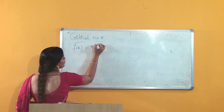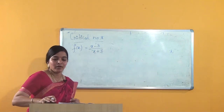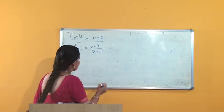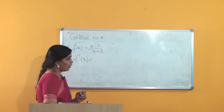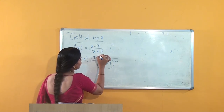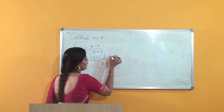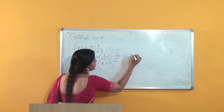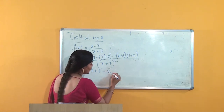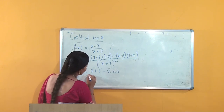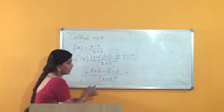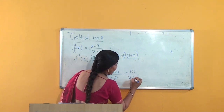Consider one more example: f(x) = (x − 3) / (x + 7). As explained in the previous problem, first we find f'(x). Using the quotient rule, f'(x) = [(x + 7)·1 − (x − 3)·1] / (x + 7)². Simplifying the numerator: x + 7 − x + 3, the x's cancel, giving 10 / (x + 7)².